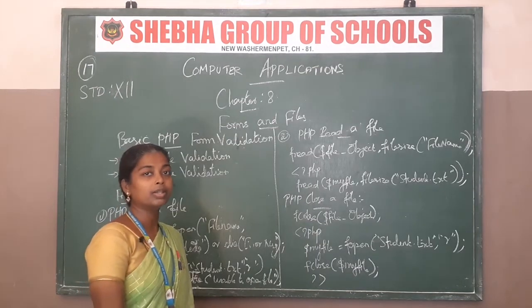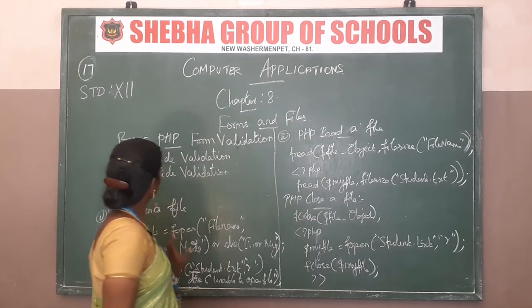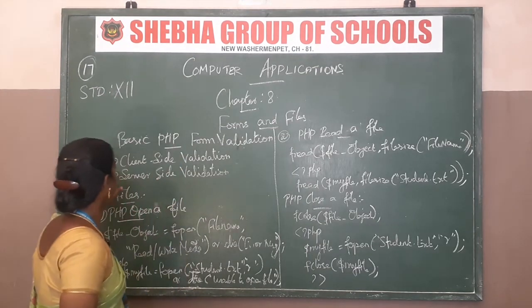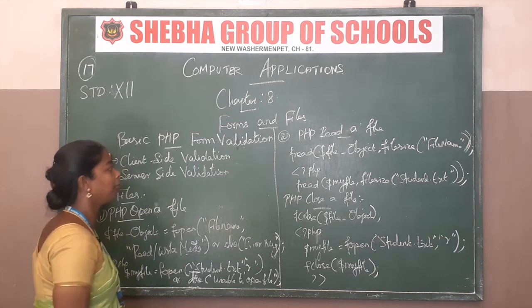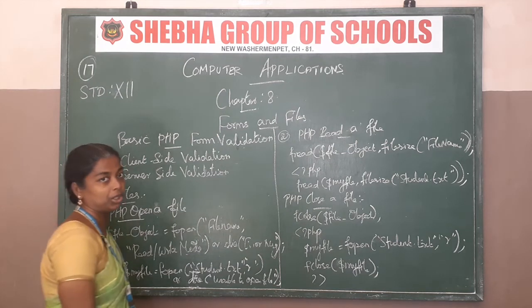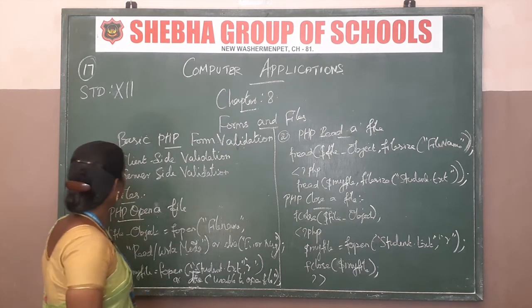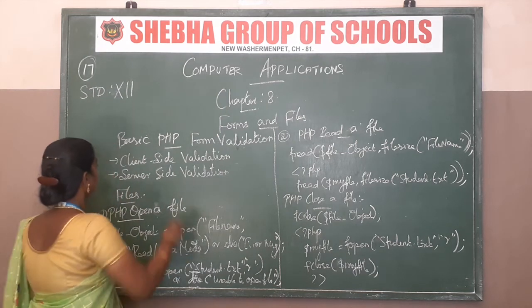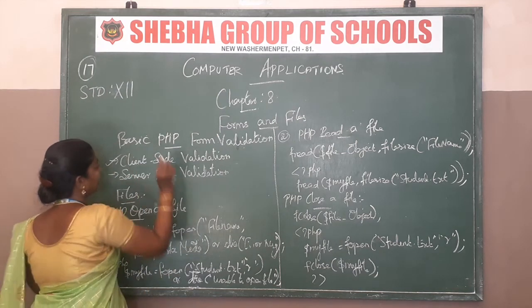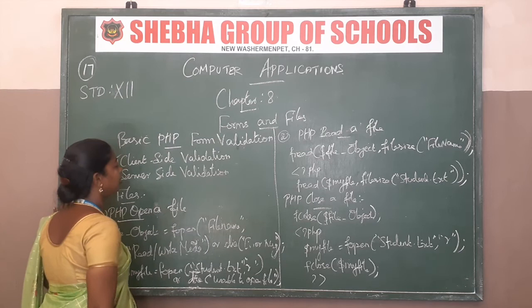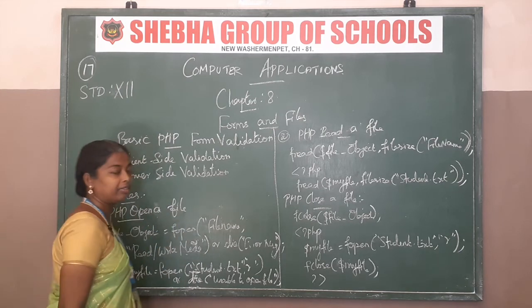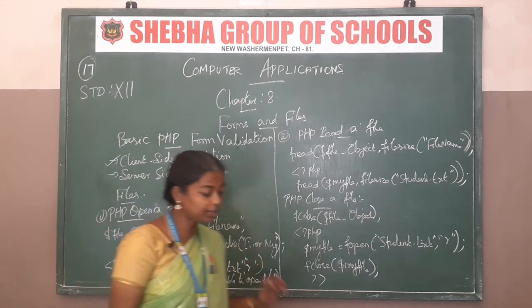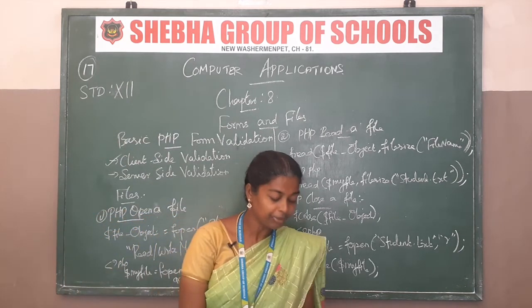The form uses two text boxes and one button. These are the examples of the form. Next concept is basic PHP form validation. There are two types of validation.